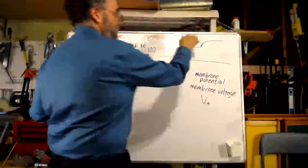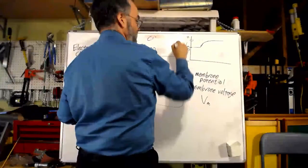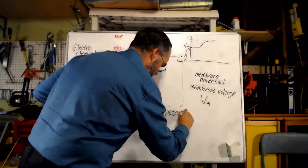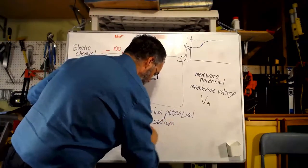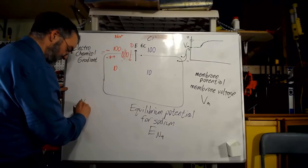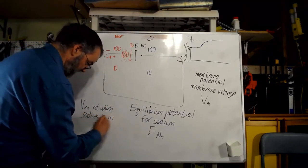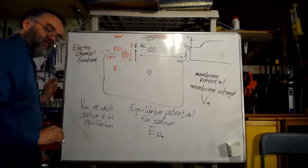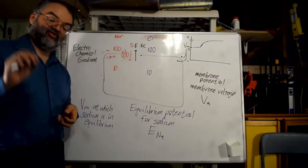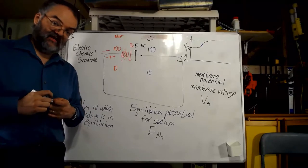This voltage — this particular amount of positive voltage — that's enough to make sodium be at equilibrium. We call that voltage the equilibrium potential for sodium, abbreviated ENa. The equilibrium potential for sodium is the membrane potential Vm at which sodium is in equilibrium. If I put a sodium channel in the membrane, sodium will cross the membrane until the membrane potential reaches ENa, at which point it will stop — sodium will have no overall tendency to cross anymore, and the membrane potential will stay at ENa.